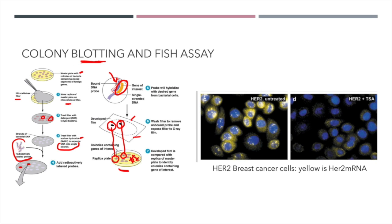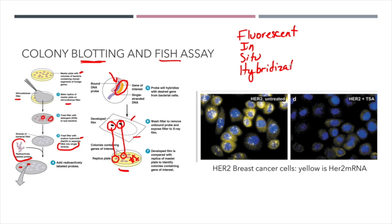Another way the probe is used in eukaryotic cells and in viable cells — in this case in cancer — is what's called the FISH assay. FISH stands for fluorescent in-situ hybridization. In-situ just means within the cell in a cell culture. In this case, they created a DNA probe that was specific for what's called the HER2 gene. The HER2 gene is associated with breast cancer, and that gene, if mutated, increases the risk of breast cancer in women. So they created a DNA probe specific for the mutated form of the HER2 gene.